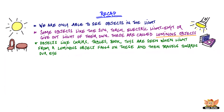Objects like chairs, tables, books, toys, etc. are seen when light from a luminous object falls on them and then travels towards our eye.